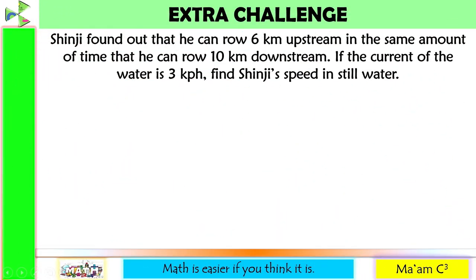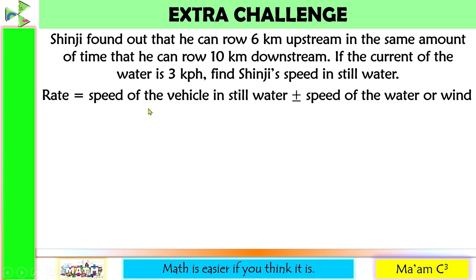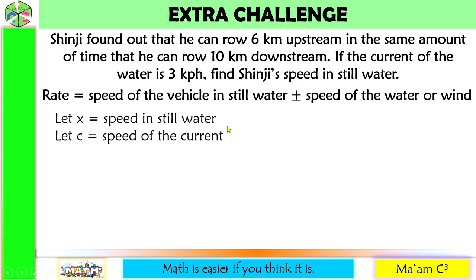Let's do an extra challenge. Shinji found out that he can row 6 kilometers upstream in the same amount of time that he can row 10 kilometers downstream. If the current of the water is 3 kilometers per hour, find Shinji's speed in still water. For this kind of problem, the rate equals the speed in still water plus or minus the speed of the water or wind. Let x be the speed in still water.